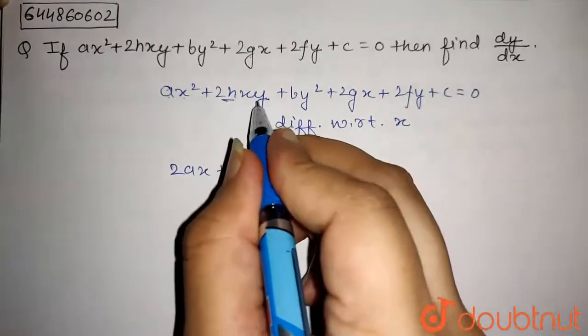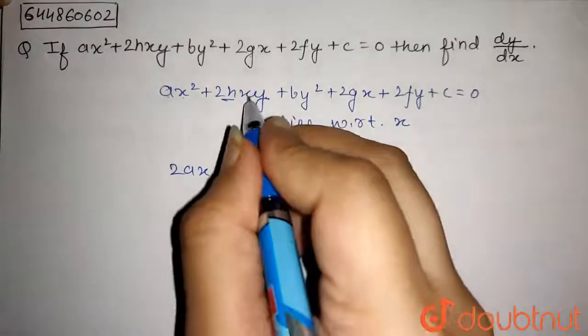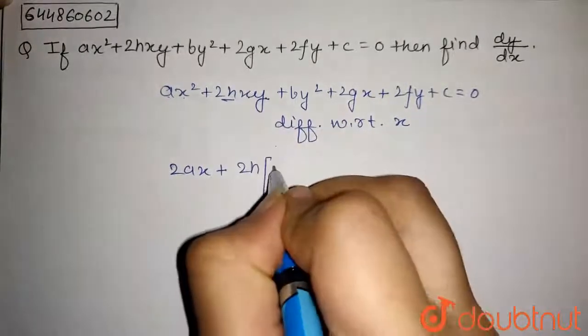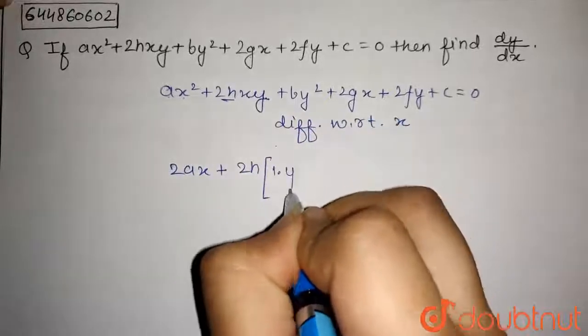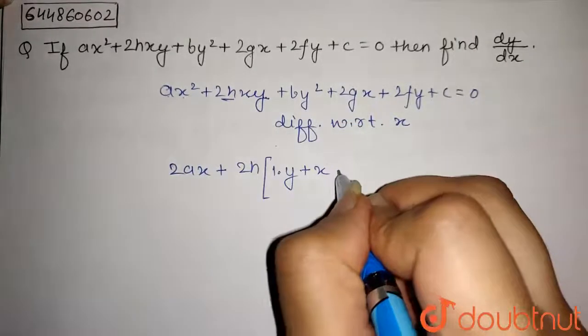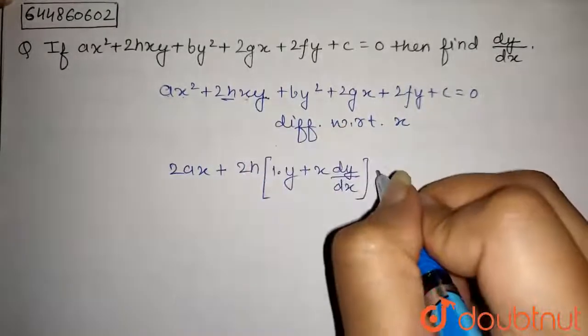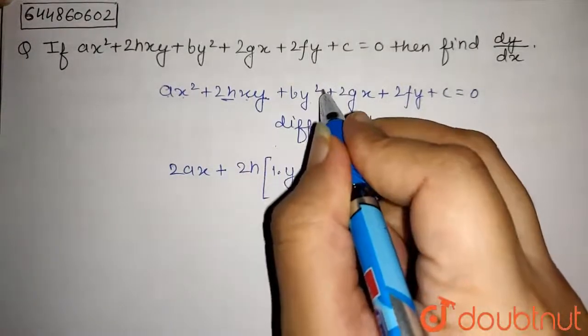we can find their derivative. Differentiation of x will be 1, y as it is, plus x as it is, differentiation of y will be dy by dx. So this will be the differentiation of x and y.